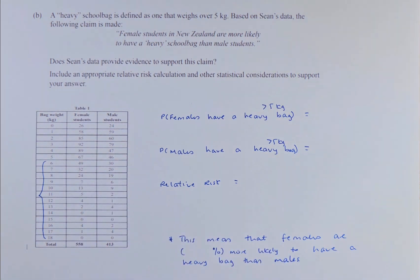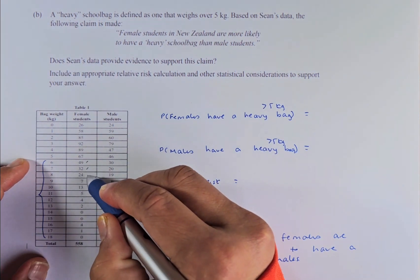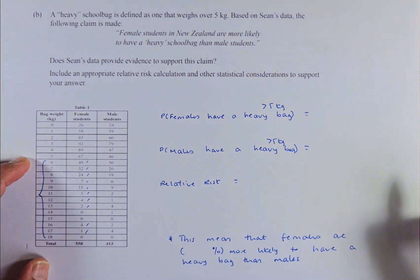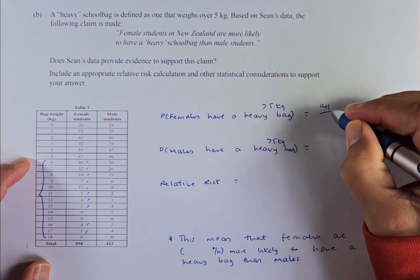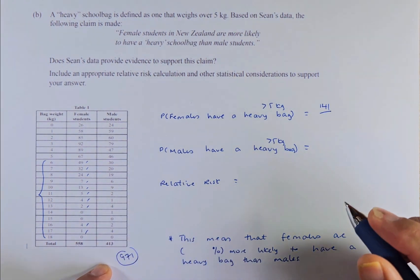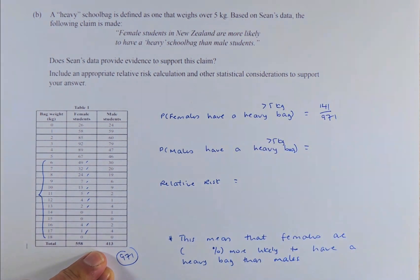So we are going to look at Table 1 again and we are going to try to solve the problem. If you look at female that have, probability that female have a heavy bag that is more than 5kg, we are going to add all this number: 49, 32, 24, 7, 13, 5, 4, 2, 4, 1. If you add in your calculator, they will come up to a total of 141 out of the total which I found earlier which is 971. The total number of people, the boys and the girls, are going to be 971 to 141 over 971.